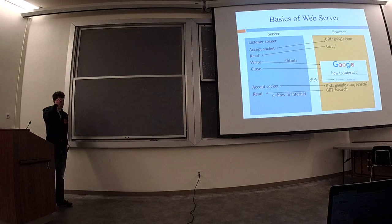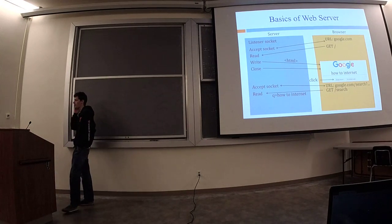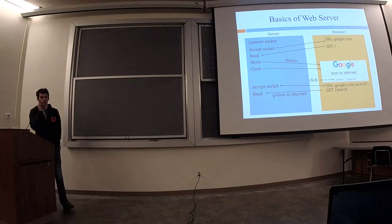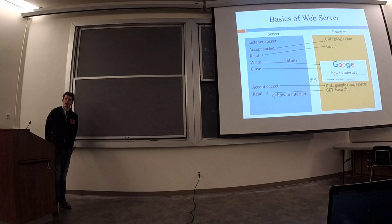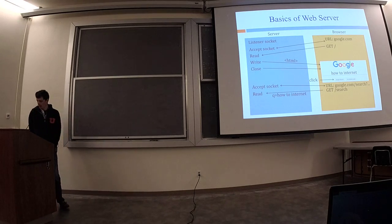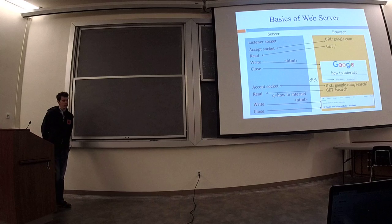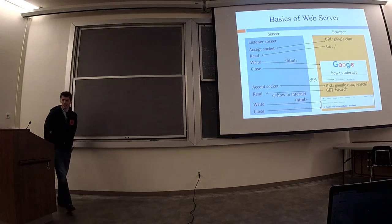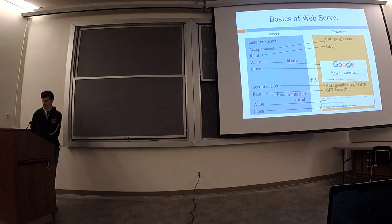The server, google.com, will decide how to interpret that. It's like, oh okay, I have this parameter called Q — query — 'how to internet.' It'll go do all of its super fancy web searching magic. '10 tips on how to internet better' is actually the real top hit, at least when I did this a while back.